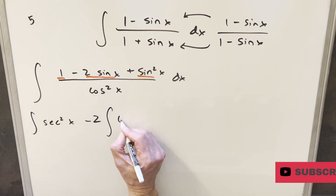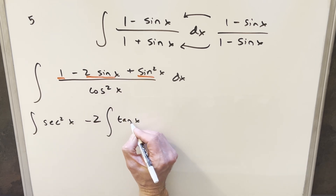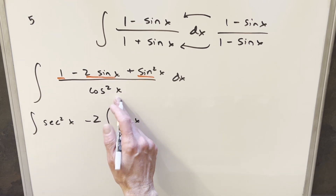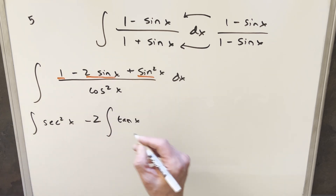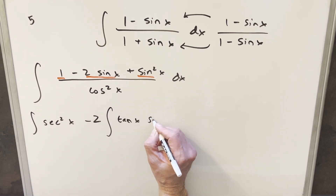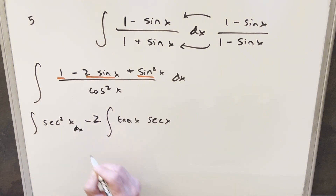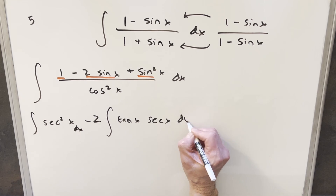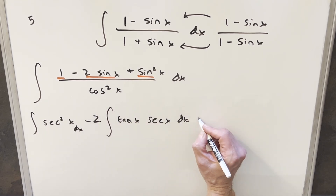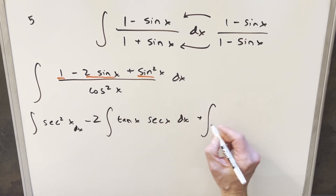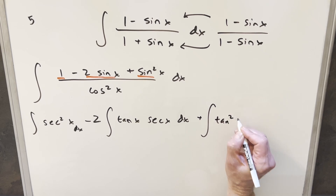sine over cosine is tan x, and then there's another cosine in the denominator, which I'll write as secant x. So we have minus 2 times tan x times secant x dx. And for the last term, sine squared x over cosine squared x, I can write that as just tan squared x.